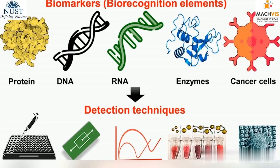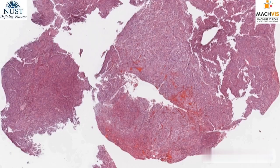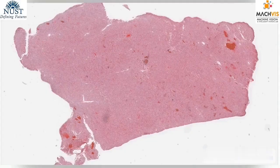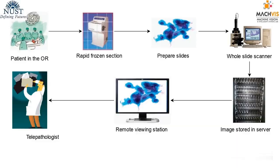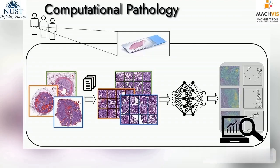Whole slide images are considered the gold standard for histopathological biomarkers. Whole slide imaging involves a number of steps to digitally scan a tissue slide containing thin sections of tissue specimen for microscopic examination and storing it as digital images. Pathologists then use specialized software to examine these digital slides, analyzing different areas of tissue samples. Computational pathology aims to enhance patient care by utilizing advances in artificial intelligence and data generated from digital and clinical pathology.